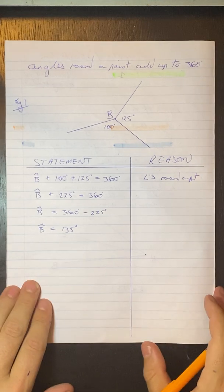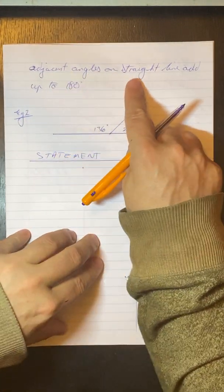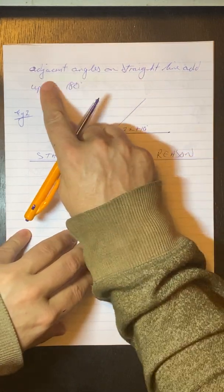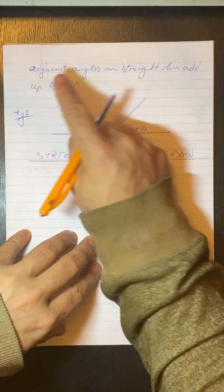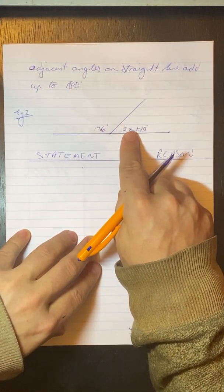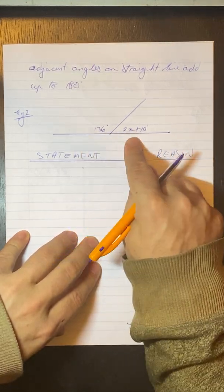All right, moving on to the next one that you guys learned. Adjacent angles on a straight line add up to 180 degrees. So you remember what adjacent means? Next to. So these two angles next to each other will add up to 180 degrees because they're on a straight line.